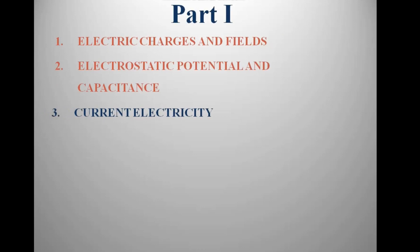Chapter 3 is Current Electricity. This chapter has both a theory exam and a practical exam. There are 6 practicals: Ohm's Law 1, Ohm's Law 2, Metre Bridge 1, Metre Bridge 2, Potentiometer 1, and Potentiometer 2 — that's 6 practicals.